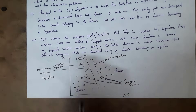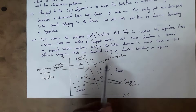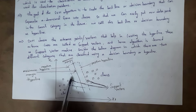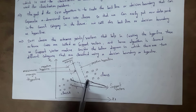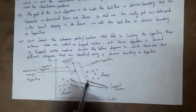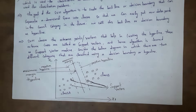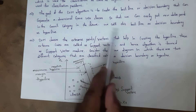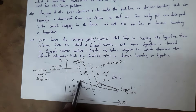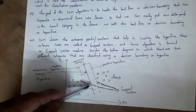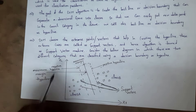Class A contains circles and class B contains squares. All the data present inside class A and class B we call as vectors. This circle is very close to the negative hyperplane and this square is very close to the positive hyperplane, so we call this circle and this square as support vectors. SVM chooses the extreme points, also called extreme vectors, that help in creating the hyperplane.